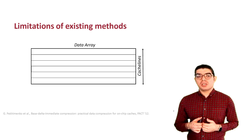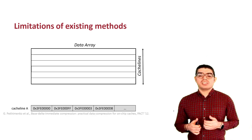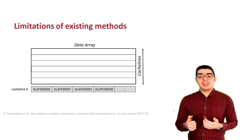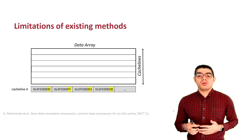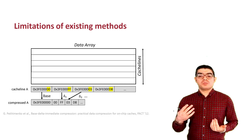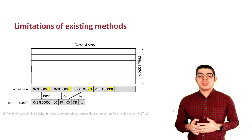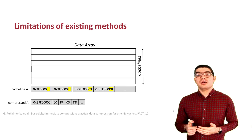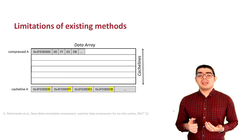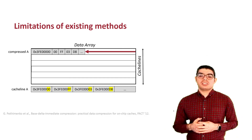First, let's look at one existing compression method and see where it comes up short. Consider cache line A, which is going to be inserted into the cache. The data values within this cache line are similar to each other. Therefore, cache line A can be compressed as a base value combined with smaller deltas, shown as compressed A in this example. We will insert the compressed A data instead of the uncompressed version.